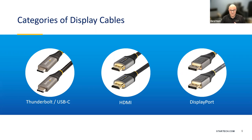Different cables may have different features. For example, USB-C — if you want that 10 gigabit transfer speed, make sure that's there. If you want to support a certain amount of power delivery charging, look for that. For HDMI, if you're going to be using HDR10 and eARC and those kinds of features, just make sure that the cable will support them.